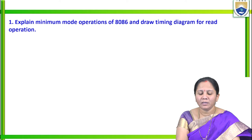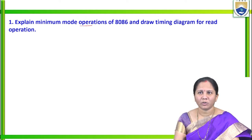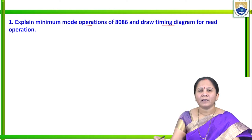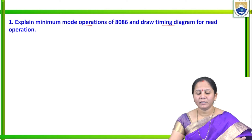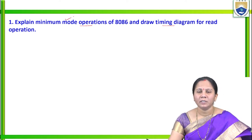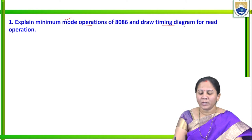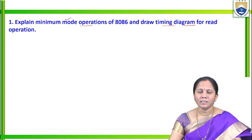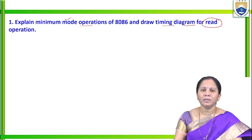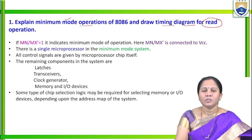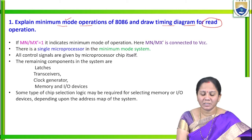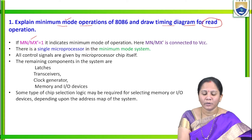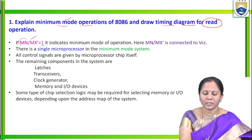The first question is: explain minimum mode operation of 8086 microprocessor and draw the timing diagram for read operation. Generally, they are asking to explain the minimum mode operation — what blocks are present inside and the function of each block — and then explain the operation with the help of timing diagrams. We have discussed timing diagrams for both read and write cycles, and here they are asking to draw the read cycle timing diagram.